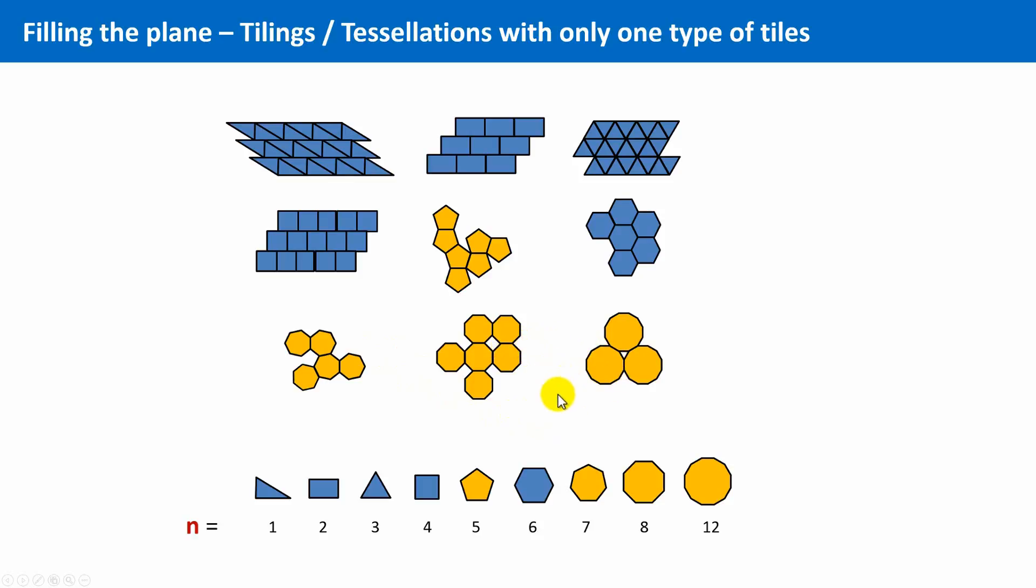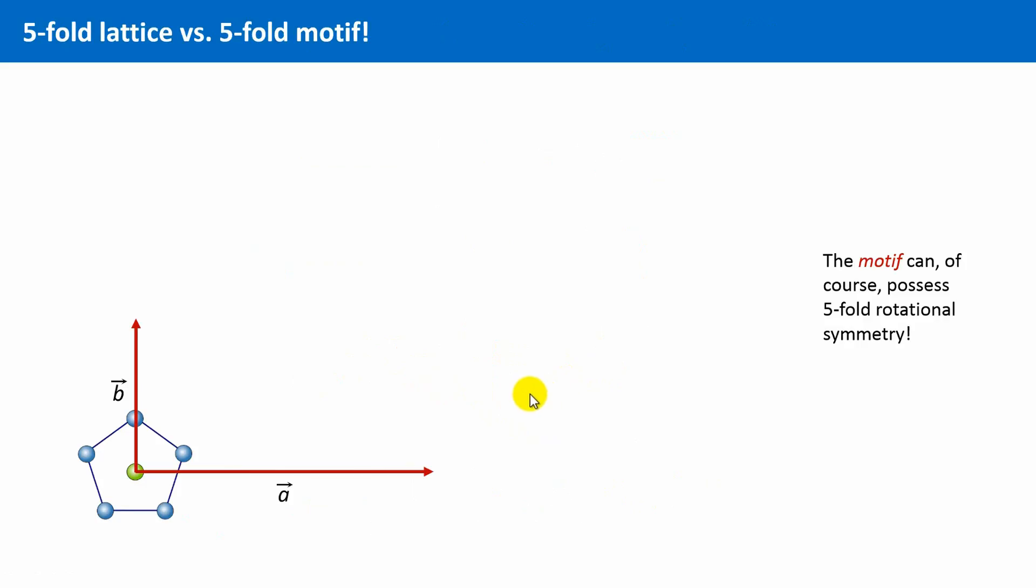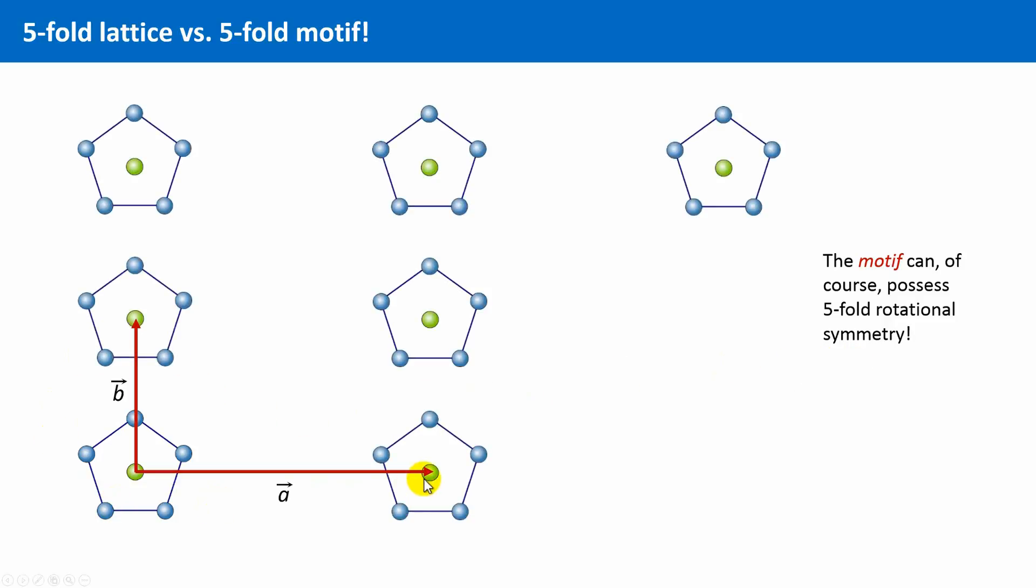Before we go ahead, let me shortly try to make clear once again the difference between the symmetry of the lattice and the symmetry of the motifs. It is, of course, possible to build up a lattice with motifs which show rotational symmetry of the order 5 or 7 or 9, as you can clearly see here in this picture.